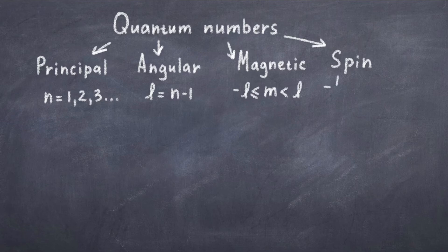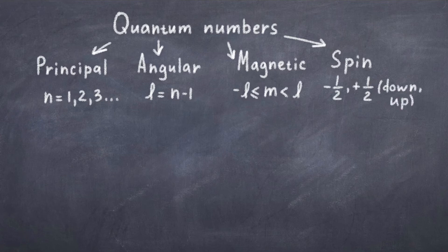We also have an additional quantum number s, which is the spin number. This is not important for defining the wave function, but it plays a role in how many electrons which can fit in each shell. For an electron, s is either minus a half or plus a half.